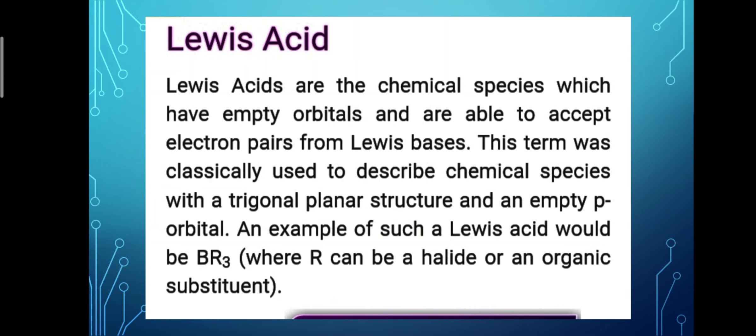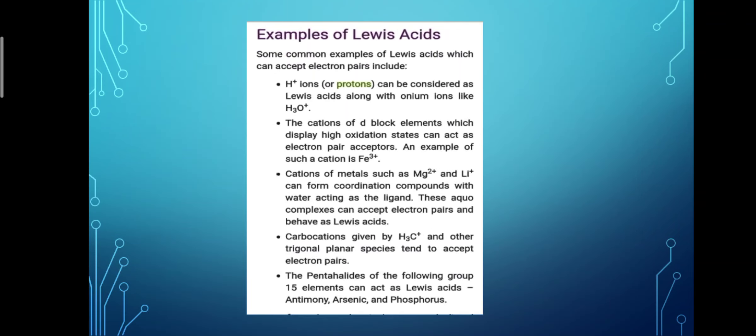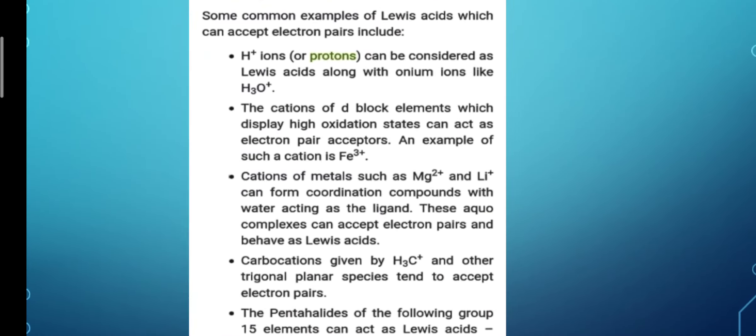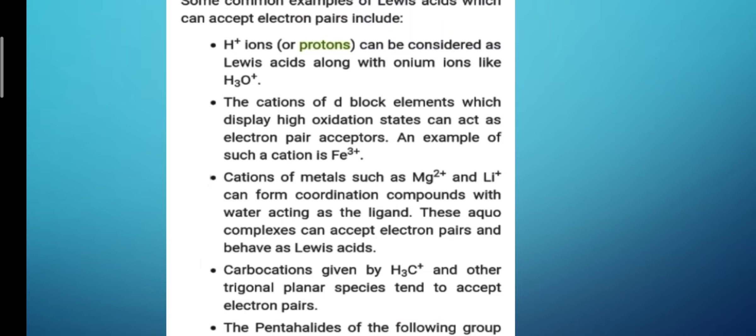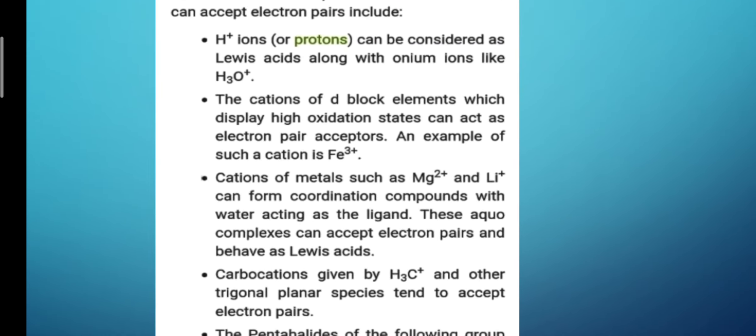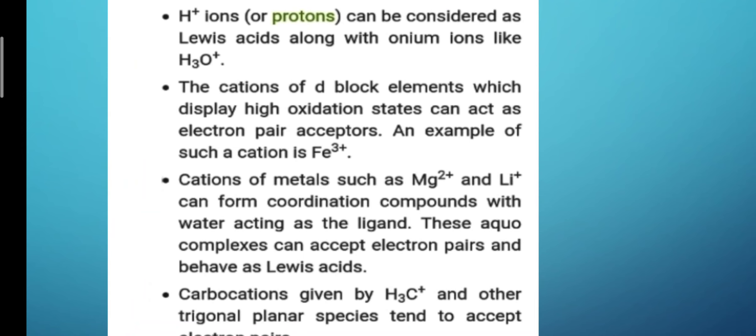An example of such a Lewis acid would be BR3, where R can be a halide or an organic substituent. Some common examples of Lewis acids which can accept electron pairs include H+ ions or protons, which can be considered as Lewis acids along with onium ions like H3O+. The cations of d-block elements which display high oxidation states can act as electron pair acceptors. An example of such a cation is Fe3+.